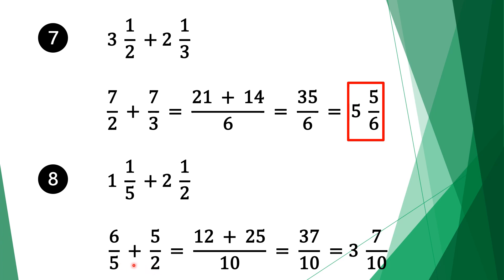10 is the common factor for 5 and 2. 10 divided by 5 is 2, 2 times 6 is 12. Move along the plus sign. Do the same for the second fraction: 10 divided by 2 is 5, 5 times 5 is 25. We add 12 and 25 which is 37, and bring the denominator 10. Since it's an improper fraction, we write it as a mixed fraction: our final solution is 3 and 7 over 10.